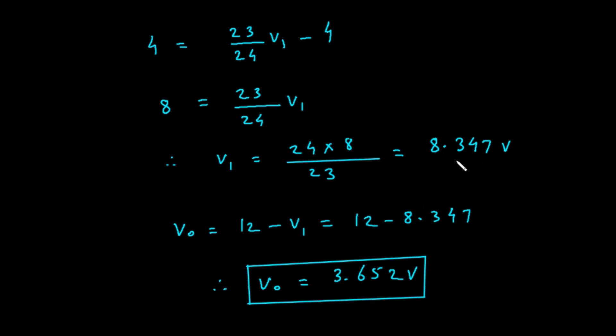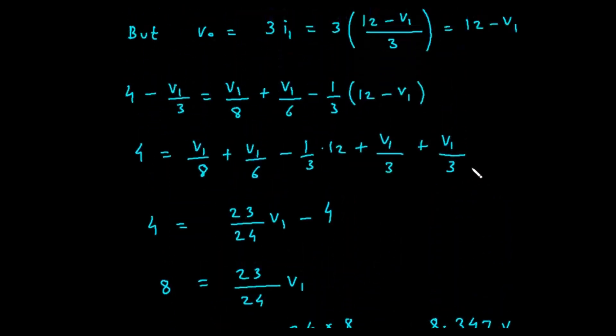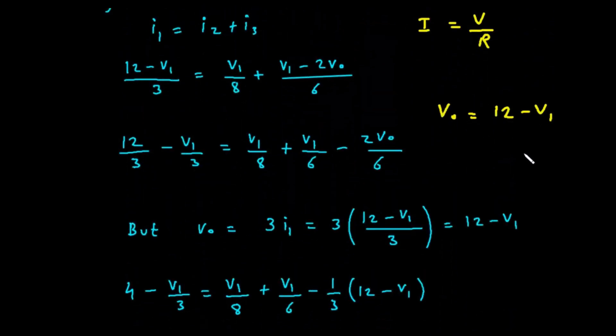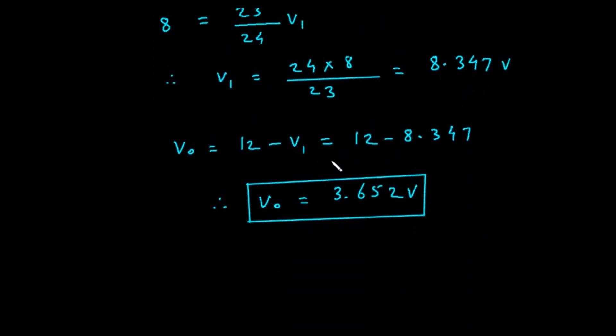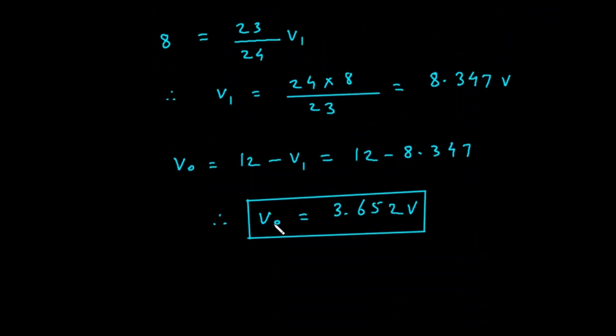We're almost there. The question asked for V naught. We use our second equation, V naught equals 12 minus V sub 1. Substituting the value we just found, V naught equals 12 minus 8.347. This gives us our final answer. V naught equals 3.653 volts. The solution in the image shows 3.652 volts, which is a minor difference due to rounding. So the voltage V naught across the 3 ohm resistor is 3.652 volts.